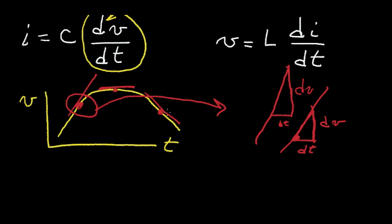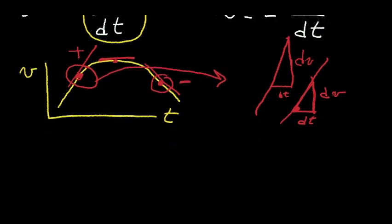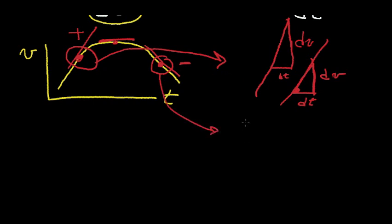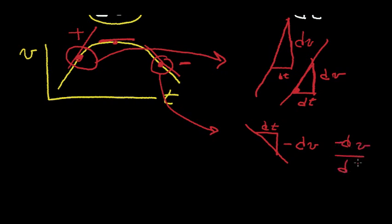So if I look at this curve, the point over here has a positive slope. The point over here has a negative slope. Why is that slope negative? Let's blow up this region. The curve looks something like this. So if I take a small change in time and a small change in voltage, my dV in this case is negative because my voltage is decreasing. My dT is positive, so if I have minus dV divided by dT, I have a negative number, or a negative slope.